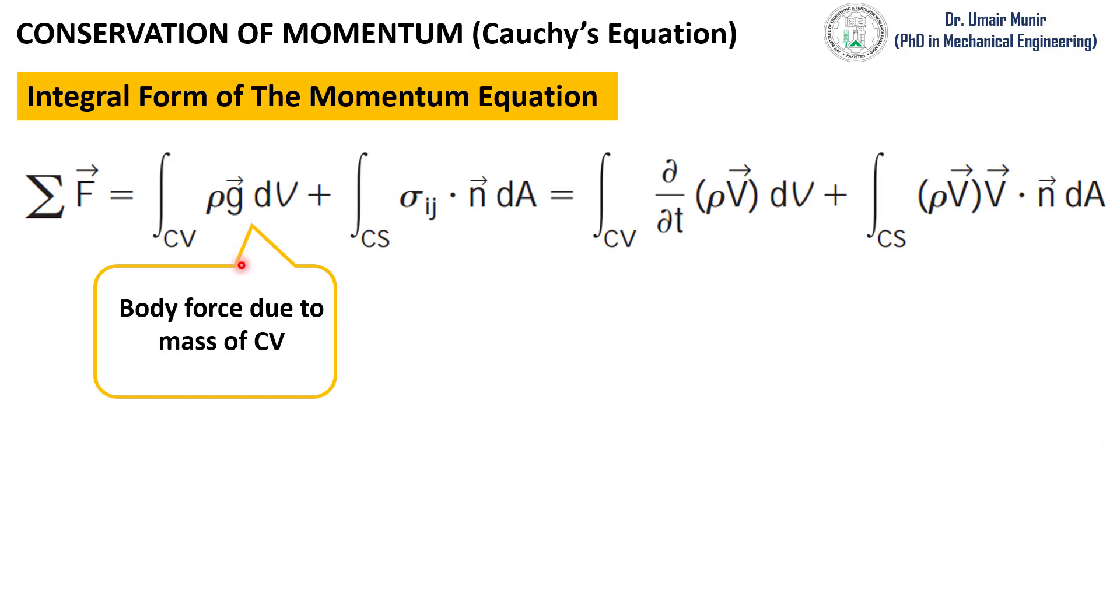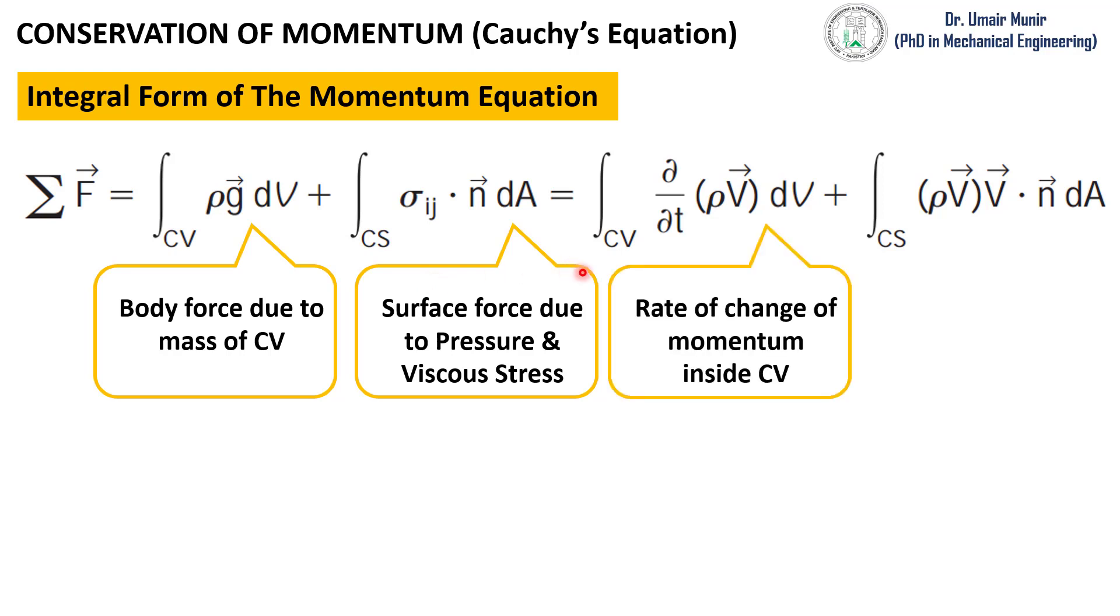The second term is the surface forces due to pressure and viscous stress. The third term is the rate of change of momentum inside a control volume, and the fourth term is the momentum flow rate across a control surface that can be an inlet or outlet.